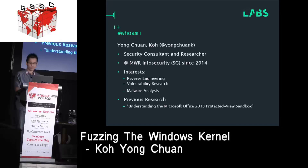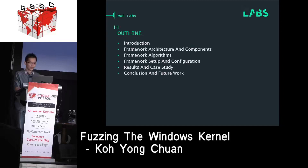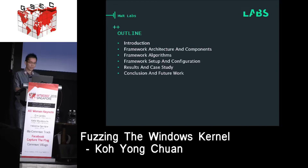Here is the outline for today's talk. I will begin with an introduction covering the motivation behind fuzzing the kernel and how we go about selecting a target kernel component. Then I'll discuss the architecture of the kernel fuzzing framework and its important components. The framework also performs logging so that reproducing the BSOD is straightforward. This is followed by a discussion on algorithms, hardware, configurations, and finally the types of BSODs discovered, including a crash analysis. I'll end with the conclusion and future work.